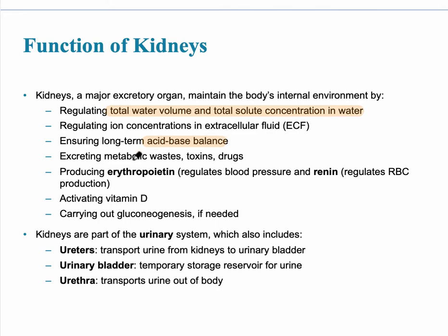The kidney produces the hormone erythropoietin, which regulates blood pressure, and also an enzyme called renin. Renin affects the regulation of red blood cell production and the renin-angiotensin-aldosterone system. Another function the kidney is responsible for is gluconeogenesis, the formation of glucose from non-carbohydrate sources.